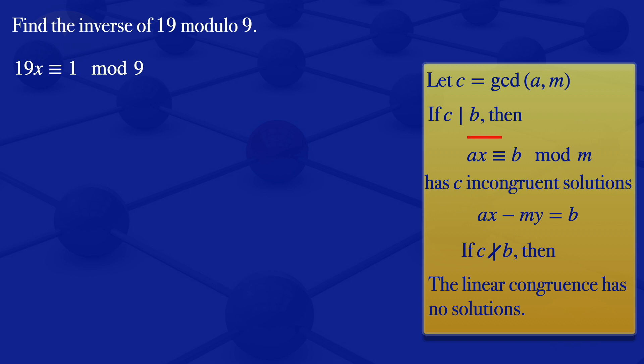So if we look at this form of linear congruences and compare it with the one that we are given here, we see that our a is equals to 19, our b is equals to 1, our m is equals to 9.